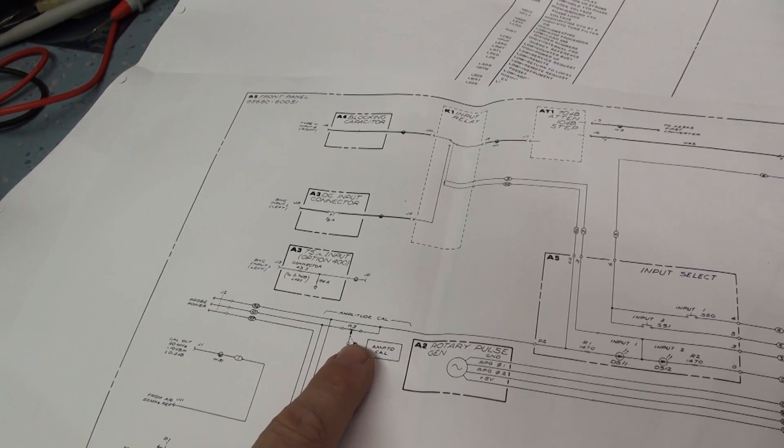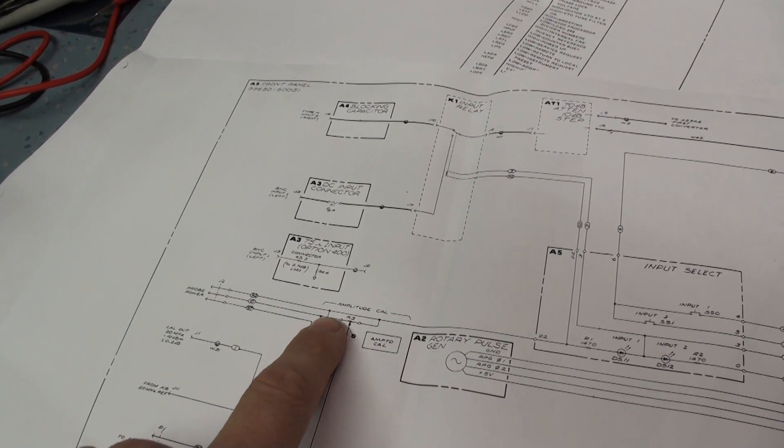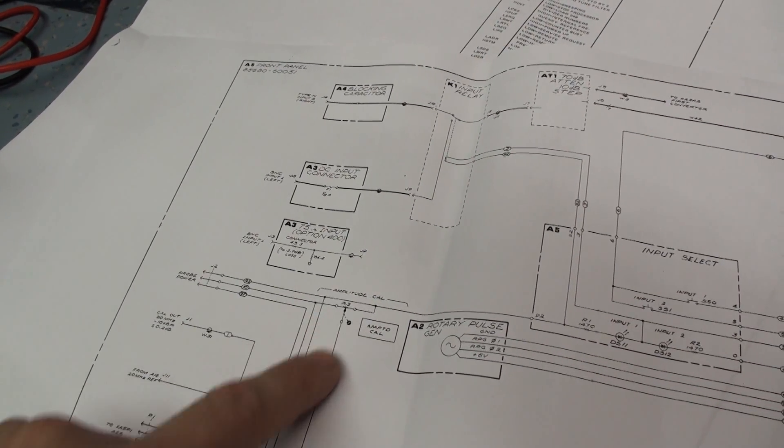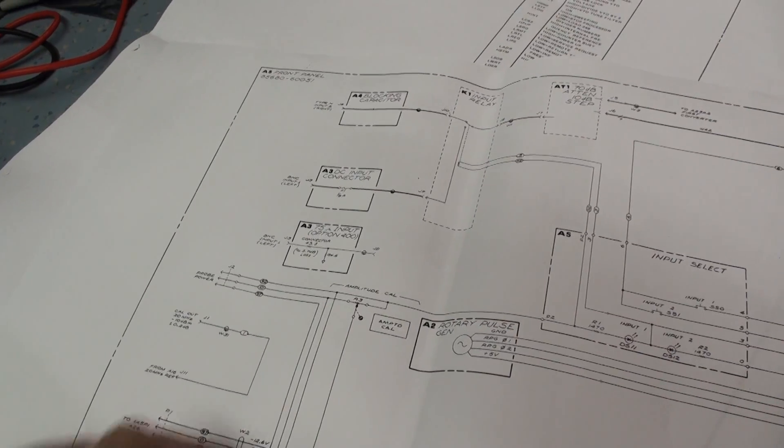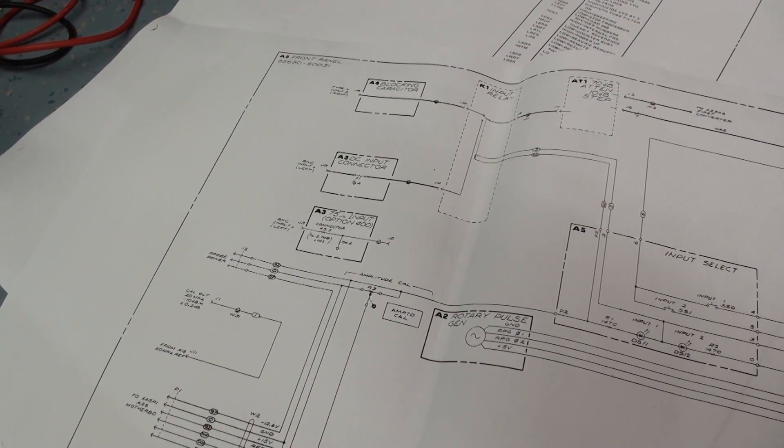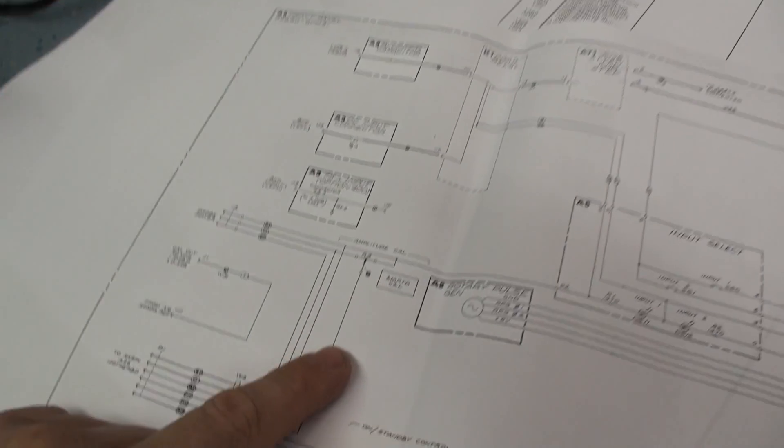So basically all this pot does, is this side of the pot's connected to ground. This side of the pot is connected to a plus 15 supply. And this is the centre wiper. It goes off to reference level, and that feeds off to the motherboard. So basically what that does is it goes from 0 to 15 volts, depending on the position of the pot. So that's fairly straightforward. So basically all that is, is a programmable voltage.